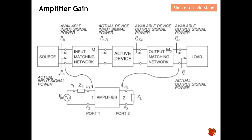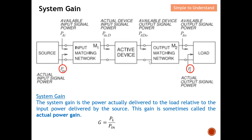There are also two widely used power terms. Looking at the source, this is called the actual input signal power. Looking into the load, this is called the actual output signal power. The input matching network and output matching network combine together with the active device to form an amplifier — source, active device, and load combined.